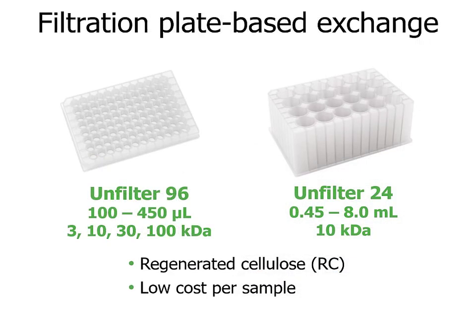Big Tuna is a filtration plate-based buffer exchange system. It uses two regenerated cellulose membrane plates — the Unfilter 96 and Unfilter 24 — to perform the buffer exchange. Both plate types are in standard SBS format, fully compatible with any automation system. The Unfilter 96 is in 96-well plate format with a working volume range of 100 to 450 microliters, and the Unfilter 24 is in 24-well plate format with a larger working volume range from 450 microliters to 8 mL. The Unfilter 96 has four molecular weight cutoff options ranging from 3 to 100 kDa, and Unfilter 24 has only a 10 kDa option.